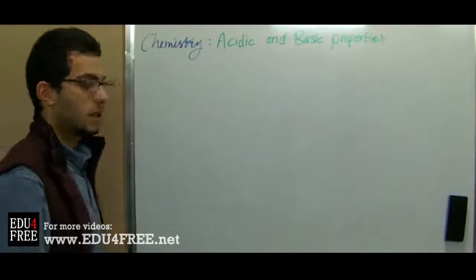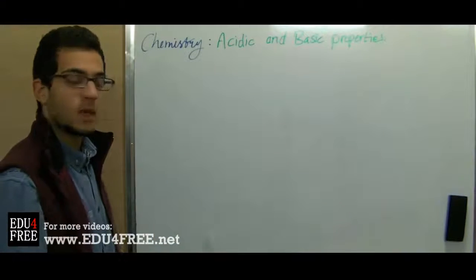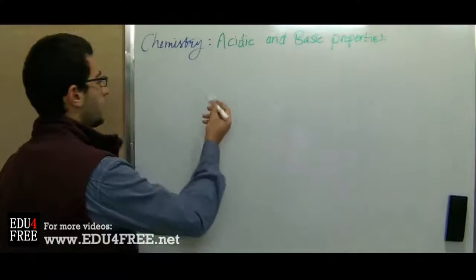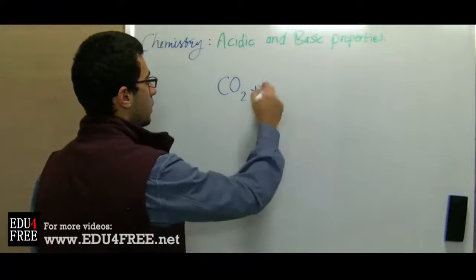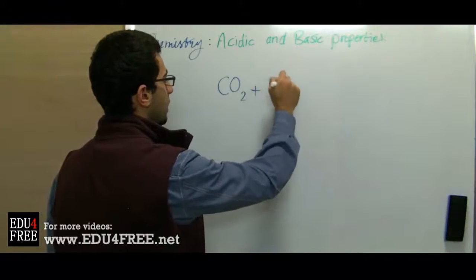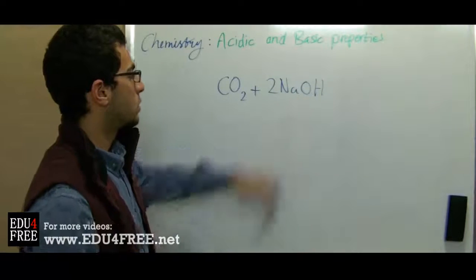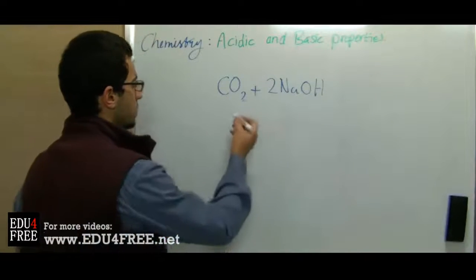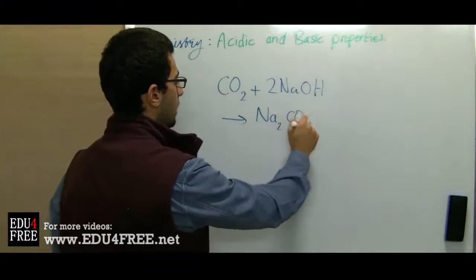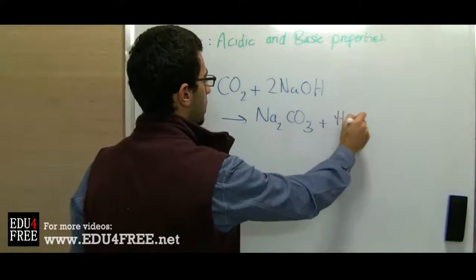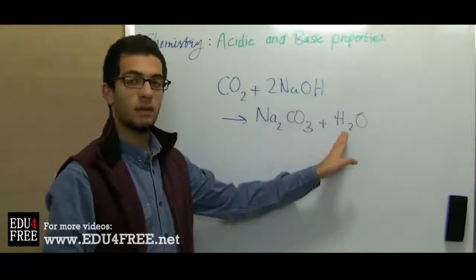We have to know also that acidic oxides, or nonmetallic oxides, react with alkalis, also producing salt and water. For example, carbon dioxide, which is a nonmetallic oxide, when it reacts with sodium hydroxide, it produces Na₂CO₃ plus H₂O — sodium carbonate, which is a salt, and water.